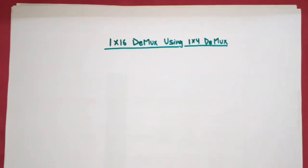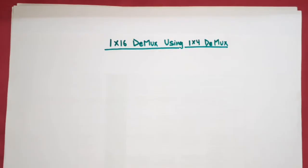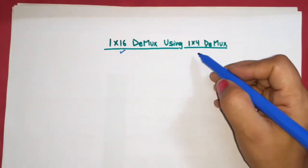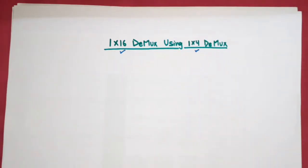Hello everyone. In this video I am going to discuss how we can design a 1-to-16 demultiplexer using a 1-to-4 demultiplexer. The required demultiplexer is 1-to-16 and the available demultiplexer is 1-to-4. So first we need to find out how many 1-to-4 demultiplexers are required to design a 1-to-16.